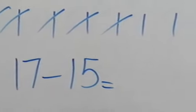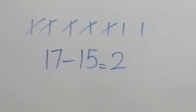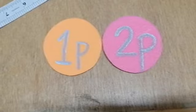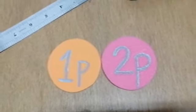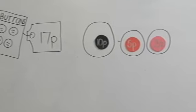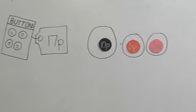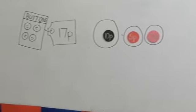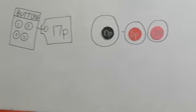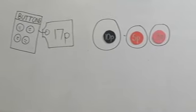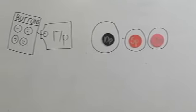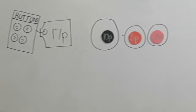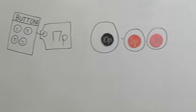17 minus 15 is equal to 2. It means humare paas only 2 paisas baki hain apna button ka pack purchase karne ke liye. Ab hum kya karenge — apne 2 paisa ke coin ko usme add kar denge. So pre-class, this is how we can add our coins. 10 paisa + 5 paisa + 2 paisa = 17 paisa. When we have 17 paisa, we can purchase this pack.